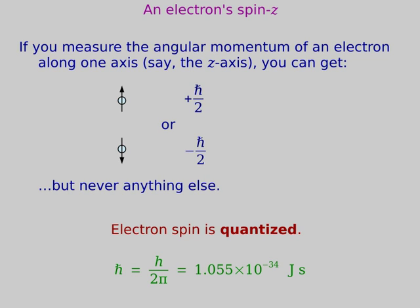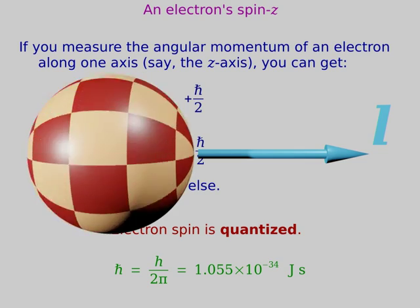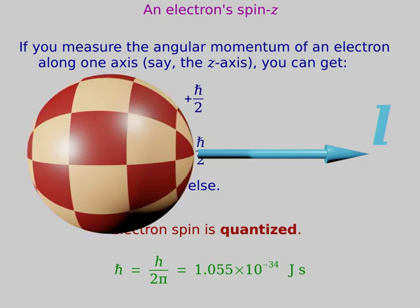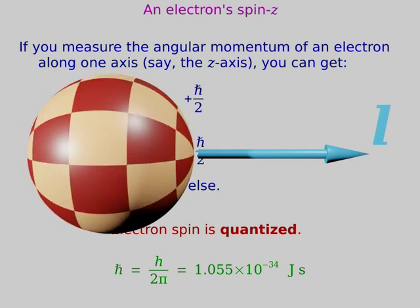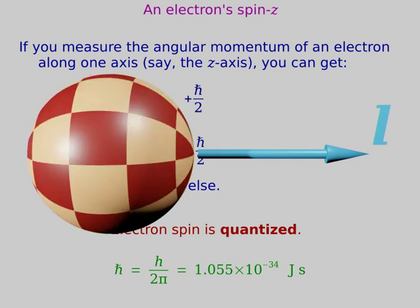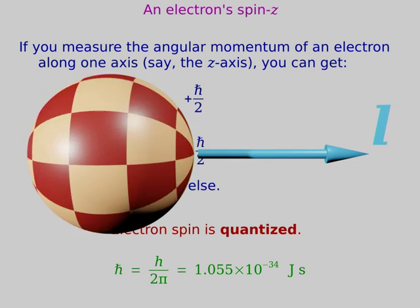Angular momentum is a vector, so you can try to measure its components. If you try to measure the z-component of electron spin — or any component, but we'll call the direction you're measuring it the z direction — you only ever get one of two values: either plus one half or minus one half, in units of the fundamental constant h-bar. That's weird. Why can't you get zero? With a regular spinning ball, if the spin is oriented so the axis points straight to the right and you measure the up-down spin, you would get zero. But that never happens for an electron.